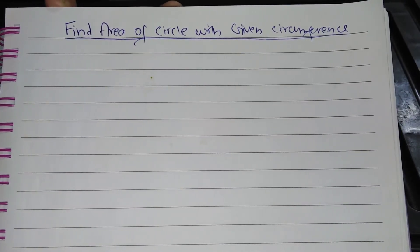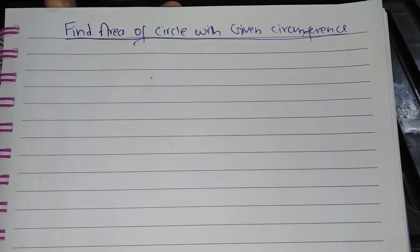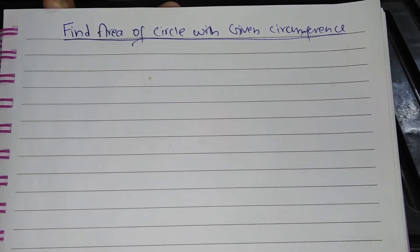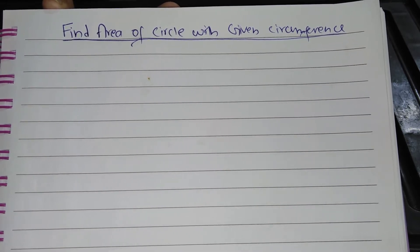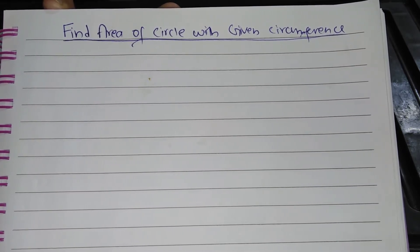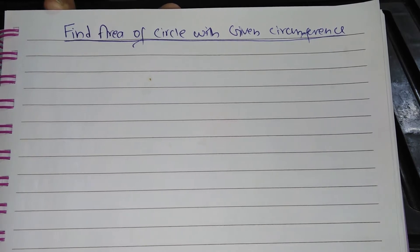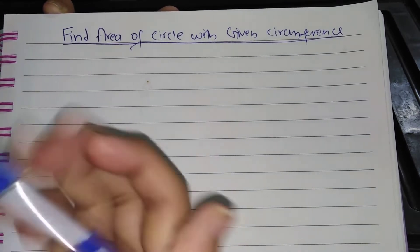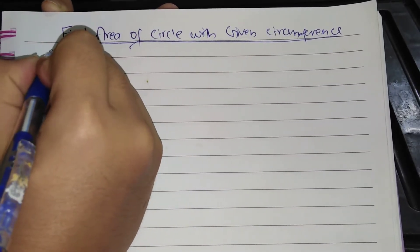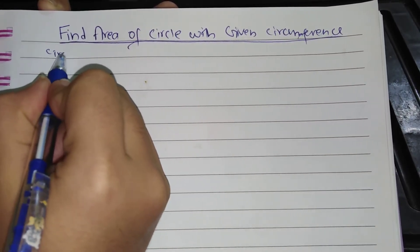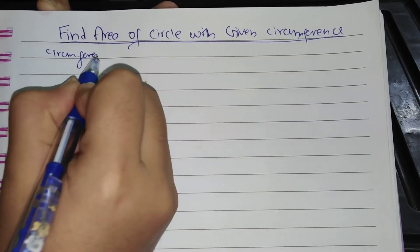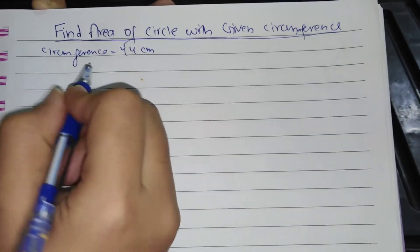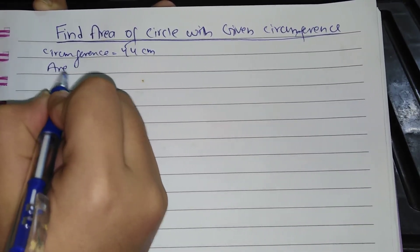Assalamualaikum viewers, welcome to my channel NDS Guru. Today I will teach you the short trick for finding the area of a circle with given circumference. Normally we use the traditional method to find the area of a circle, which is a long method. So first we discuss the traditional method. Circumference is given which is equal to 44 cm. We have to find the area of the circle.